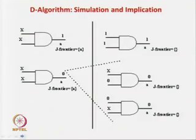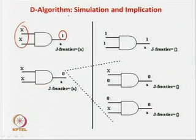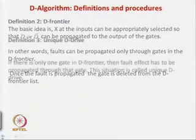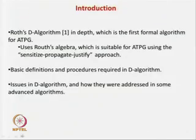In summary, the D algorithm uses the D frontier for forward propagation of fault effects and the J frontier for backward justification of input values. The singular cover tables are essential to know when operating with J frontiers and D frontiers. After justification using a gate, that gate is deleted from the J frontier. A gate in the J frontier has scope to justify the output, but this may not always be successful due to inconsistencies.